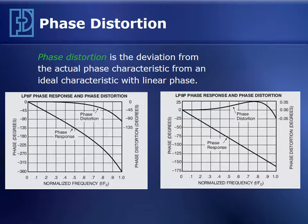Phase distortion is the deviation of the actual phase versus frequency curve compared to an ideal linear phase characteristic. The phase distortion plot for the elliptic flat mode filter shows nonlinear phase across the passband — about five degrees of phase distortion at half the cutoff frequency, growing to about 100 degrees at the cutoff frequency. For the pulse mode LP8P, which has linear phase, the phase distortion curve is less than 0.05 degrees across the passband — excellent phase linearity.